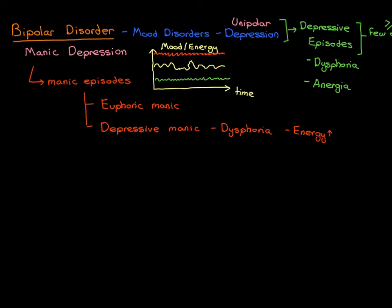People with depressive manic episodes have a much reduced need for sleep compared to normal. Now let's come on to euphoric manic episodes — the classical ones — where energy doesn't just go up but mood also goes up through the roof. That's the nicer one to have in a way — you're happier in that episode — but it is a rarer type. There are more symptoms of a depressive manic episode to discuss before we get to euphoric manic episodes.